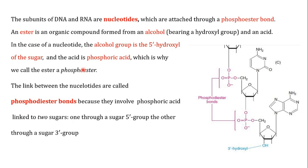Because the acid part comes from phosphoric acid, we call it a phosphoester bond. Now, the links between nucleotides are called phosphodiester bonds because they involve phosphoric acid linked to two sugars. As you can see in the image, this phosphate group coming from the phosphoric acid is attached to the five prime carbon of one sugar and the three prime carbon of another sugar.